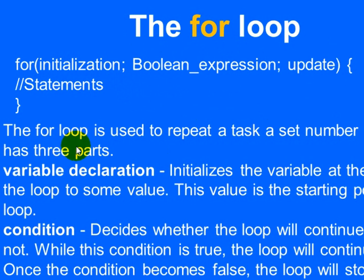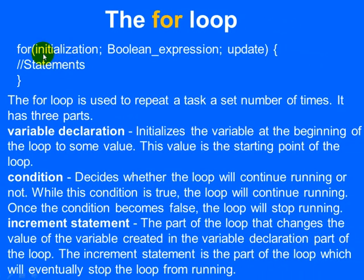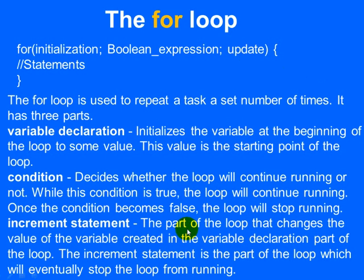We can declare variables in the first part of the for loop as well as initialize them. Variable declaration initializes the variable at the beginning of the loop — this value is the starting point of the loop. Then we have the condition, the boolean expression, which decides whether the loop will continue running or not. While the condition is true the loop continues; once the condition becomes false the loop stops. Then we have the increment or update statement — the part that changes the value of the variable and will eventually stop the loop from running.